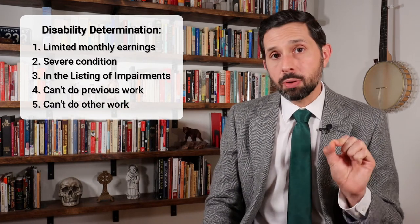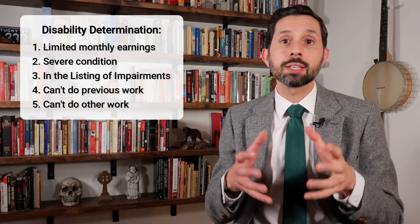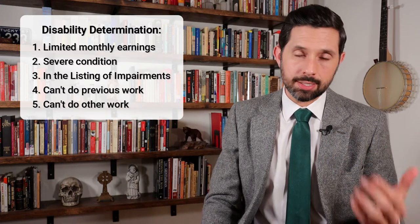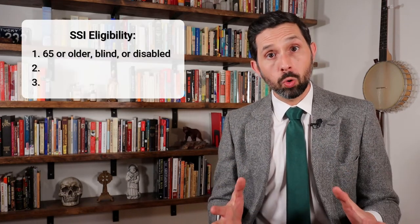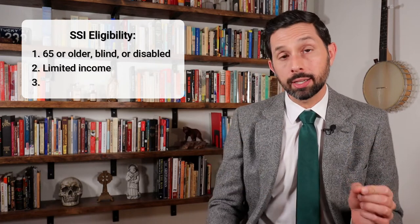For Step 5, your condition must prevent you from doing other work. The SSA will consider things like your medical condition, age, education, work experience, and skills. If you can do other work, then you're not disabled. If you can't do other work, then you are disabled. In addition to being 65 or older, blind, or disabled, you must also have limited income.